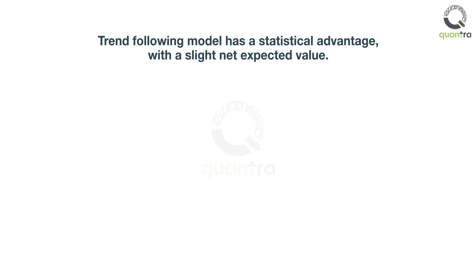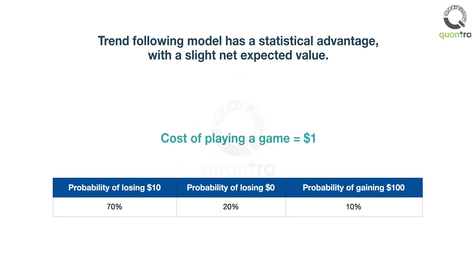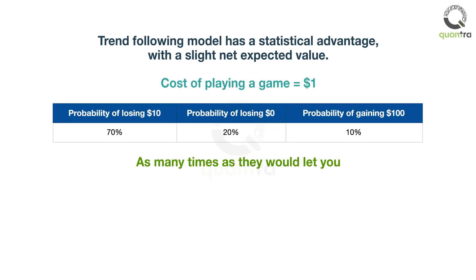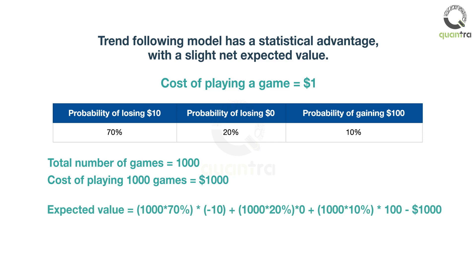A good trend following model has a slight statistical advantage with a slight net expected value. Imagine, as an example, if you could play a casino game costing one dollar, where you have a 70% probability of losing ten dollars, a 20% probability of plus or minus zero, and a 10% chance of gaining 100 dollars. How many times would you play the game? The answer should be: as many times as they would let you. If you play such a game once, anything could happen. Ten times, anything could happen. But if you play it a thousand times, you are likely to have net gains of $2,000.